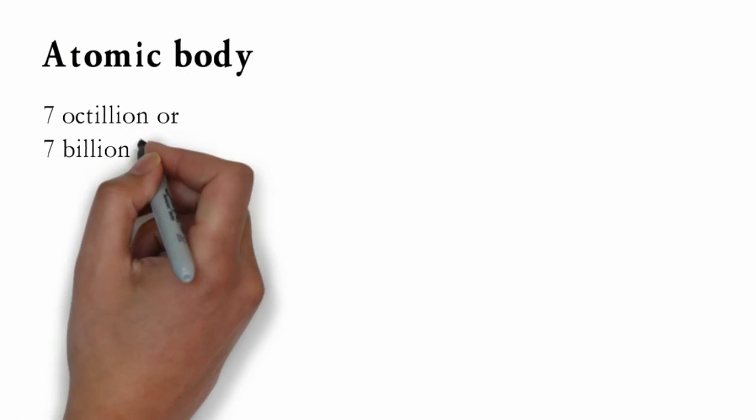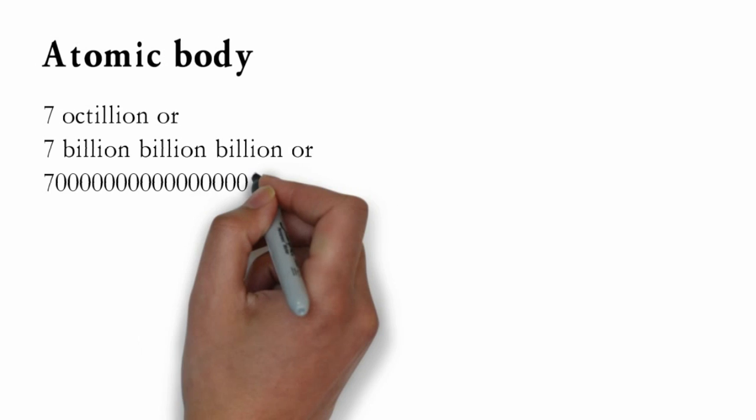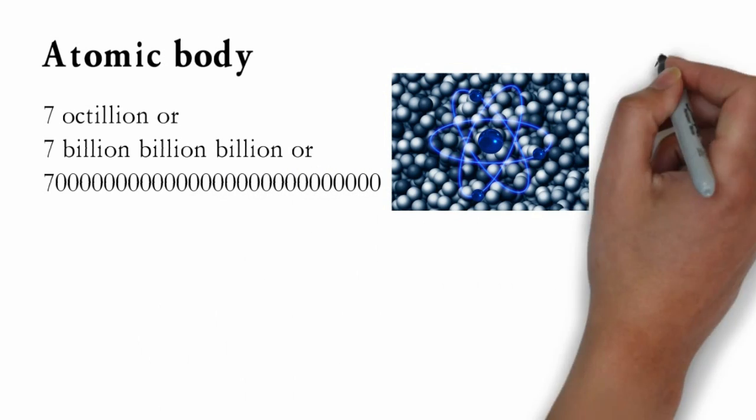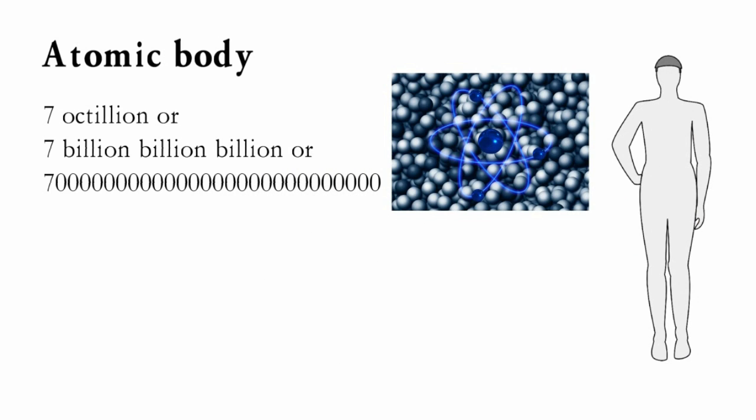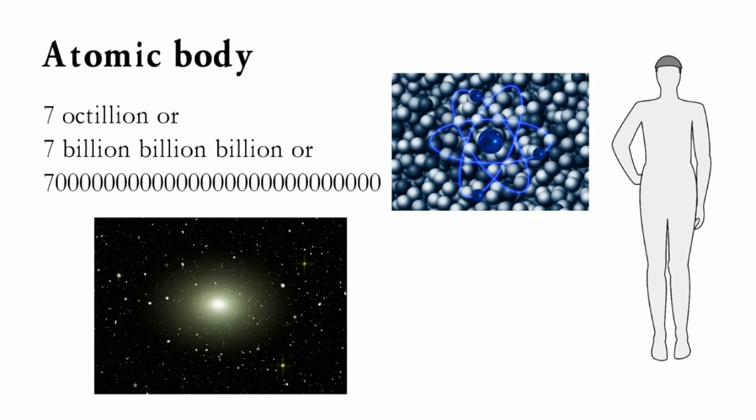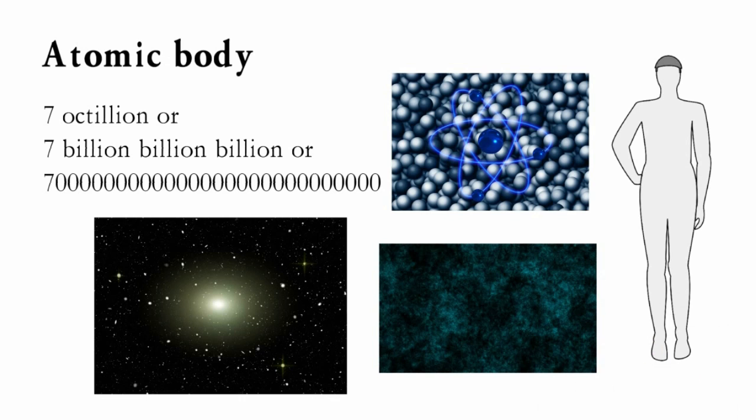Atomic body. Human body comprises of staggering 7 octillion, or 7 billion billion billion atoms. All these atoms which make up human body were forged in the stars. These atoms came from the stars which exploded billions of years ago. We are actually made of stardust.